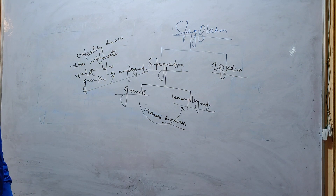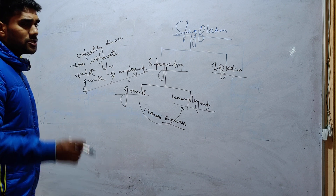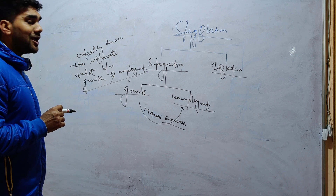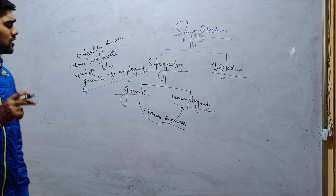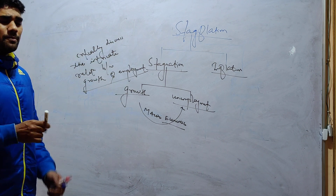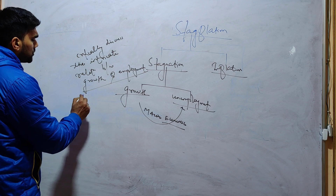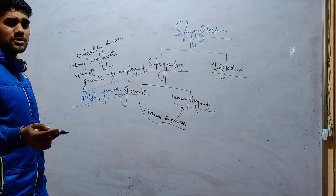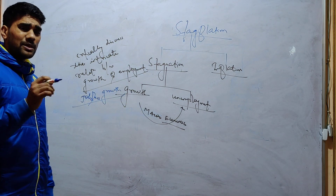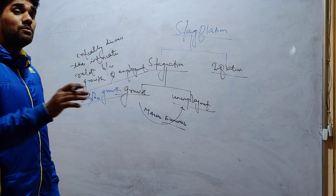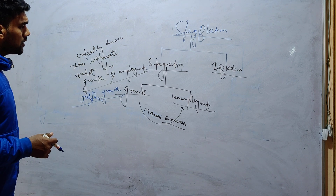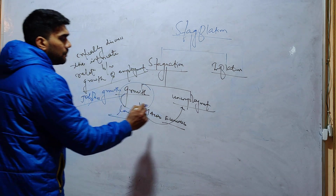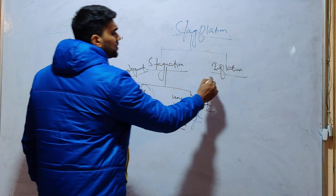Growth and employment can be one UPSC mains question. In 2019 mains they asked the relation between growth and inflation; in future they can ask about growth and employment. The Indian economy is also called a jobless growth economy — meaning growth is not able to create enough number of jobs. So if growth numbers are low, unemployment numbers are high, and inflation is high, this can create a problem of stagflation.